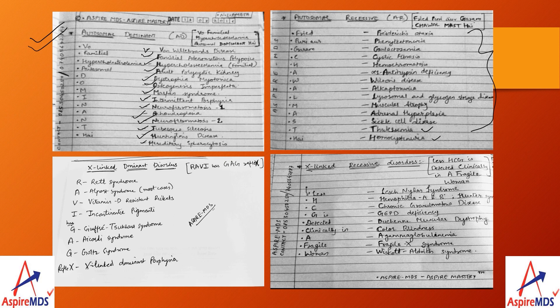For X-linked dominant disorders, the mnemonic is 'RAVI HAS GAG REFLEX.' R stands for Rett syndrome, A for Alport syndrome, V for vitamin D-resistant rickets, I for incontinentia pigmenti, G for Goltz syndrome, A for Aicardi syndrome, G for Gold syndrome, and X from reflex stands for X-linked dominant porphyria.